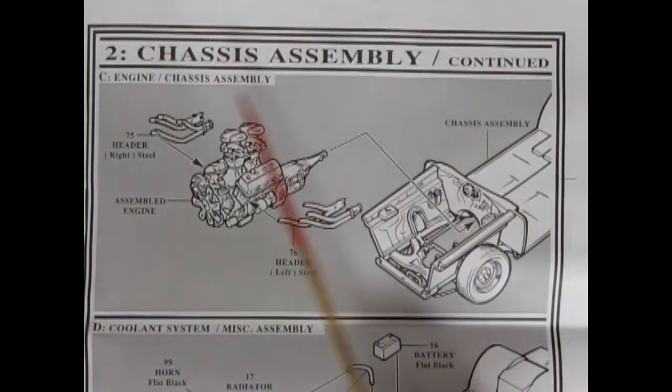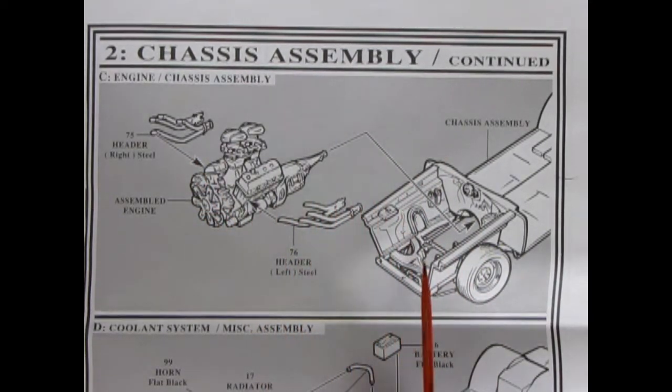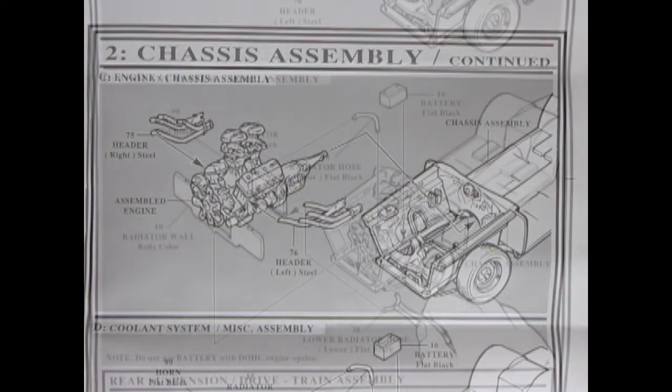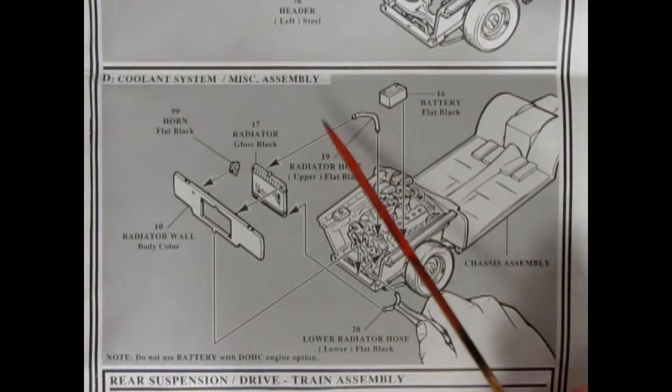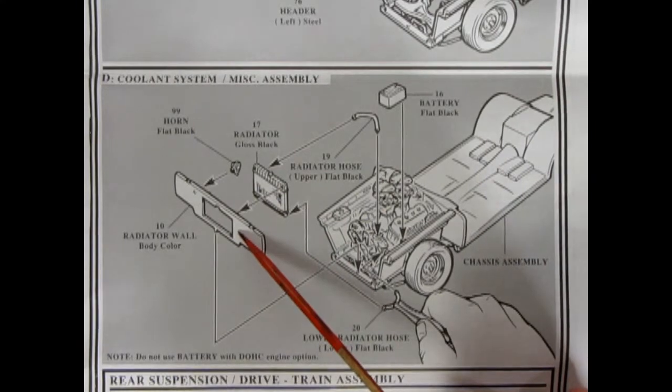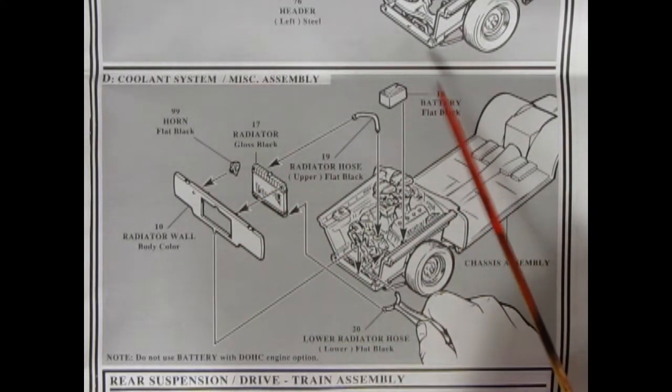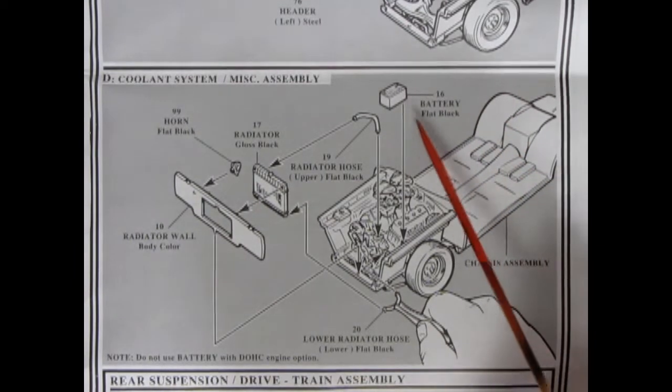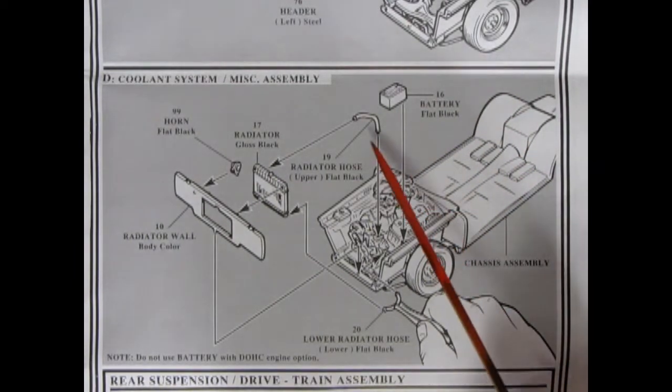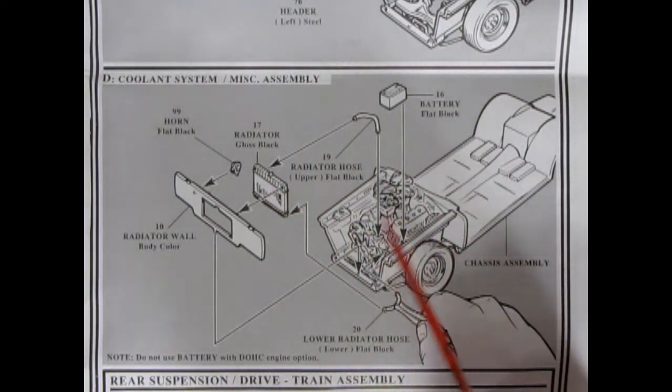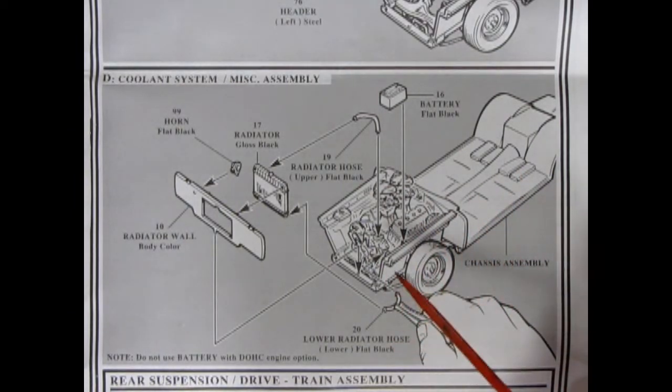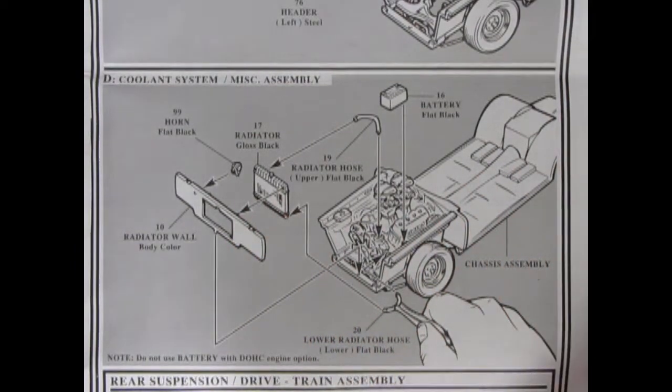All right. In chassis assembly number two we've got our great big mill getting on the header so it can breathe. And then we drop it right into our chassis. And right here we want to cool our ride down a little bit with our radiator hose and our radiator wall. And then add in some horns so we can hear the sound of the road runner. And then we're going to drop our battery in as well as an upper radiator hose just to cool this big block. And add in the lower radiator hose so that the warm water can come back in and cool back down again.